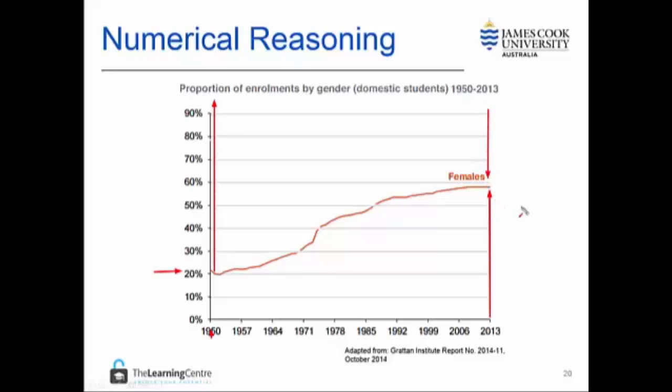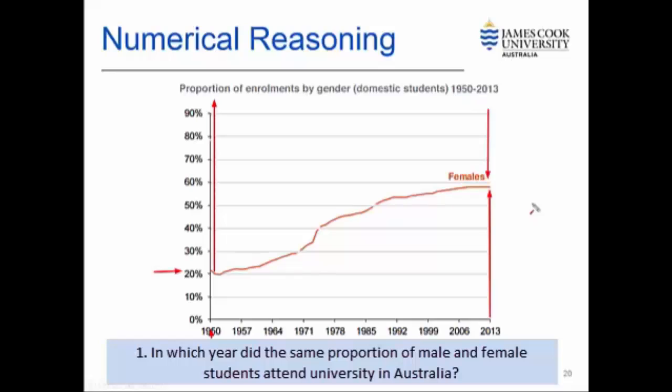Once we understand that about this graph, it is quite easy to answer these questions. Question one says: in which year did the same proportion of male and female students attend university in Australia? We know that the same proportion will mean 50%. By looking at the graph, we can easily see that this occurred in approximately 1986.